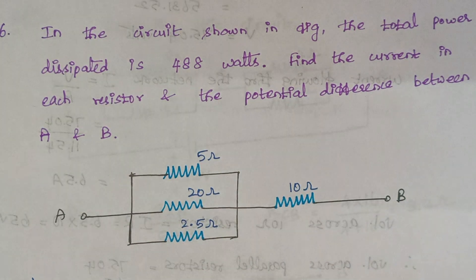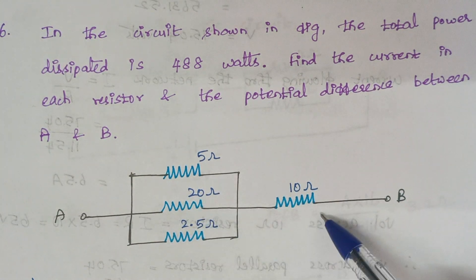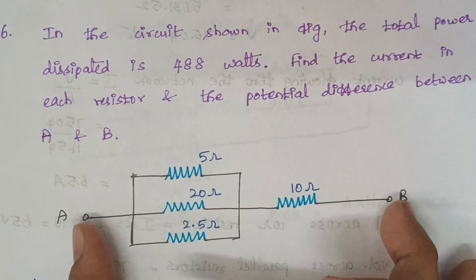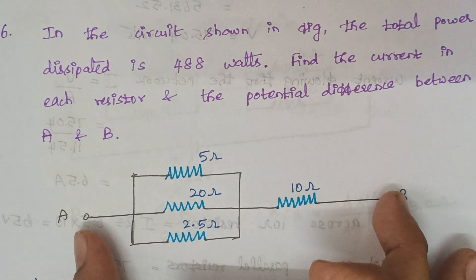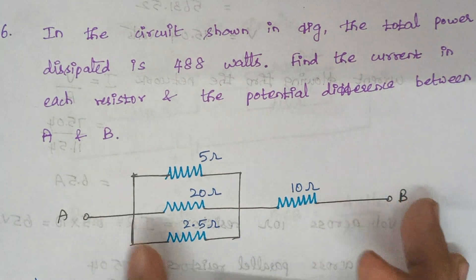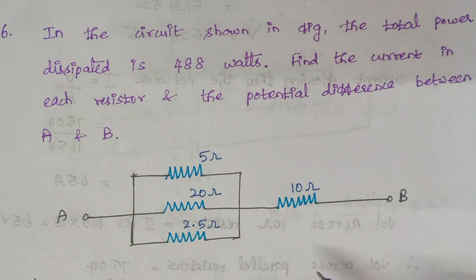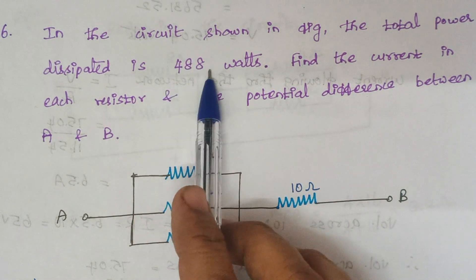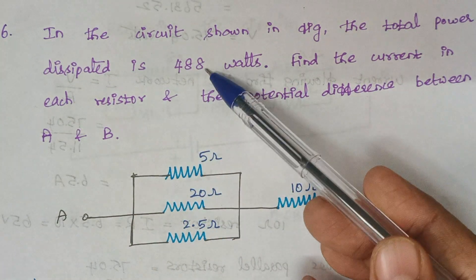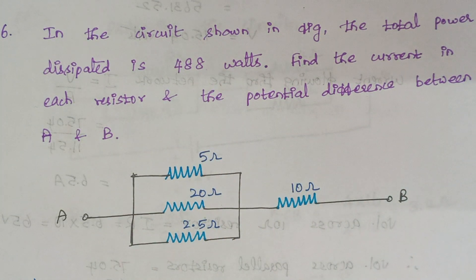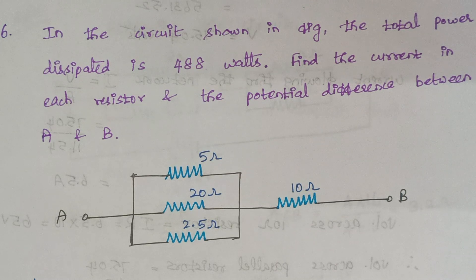That is, we need to calculate the current that flows through all the resistors and the voltage across terminal AB. The one and only given data is power. With the help of power, we need to calculate the rest of the things. The first thing is we are going to calculate the value of total resistance for this given circuit.